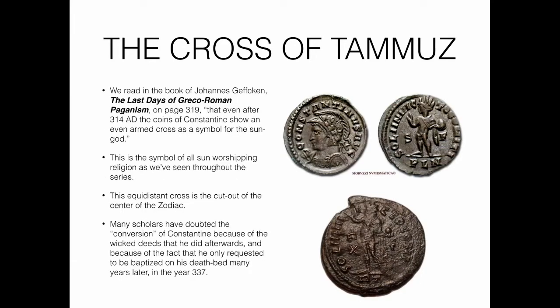In The Last Days of Greco-Roman Paganism, page 319, even after 314 AD the coins of Constantine show an even-armed cross as a symbol for the sun god — the symbol of all sun-worshiping religion throughout the ages. This equidistant cross is the cutout of the center of the zodiac. Many scholars have doubted Constantine's conversion because of his wicked deeds afterwards and because he only requested baptism on his deathbed in 337. On his coins you can see a cross near his head on one coin, and a chi or cross symbol on another.